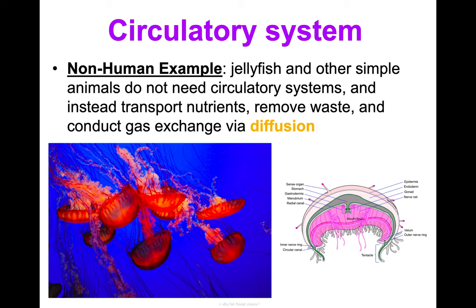The respiratory system goes hand in hand with the circulatory system because they work together — it too is involved in gas exchange, taking in oxygen and getting rid of carbon dioxide, which is a product of cellular respiration.